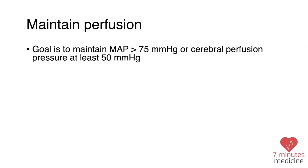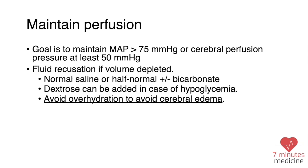For managing perfusion, we have to maintain mean arterial pressure above 75 or cerebral perfusion pressure at least 50. To do that, we might need to give IV fluids if the patient is volume depleted — normal saline, add bicarb if there is acidosis, and add dextrose if there is hypoglycemia. The most important thing is to avoid over-hydration because it can result in cerebral edema.